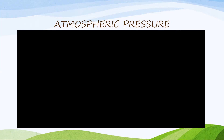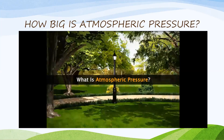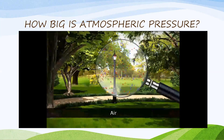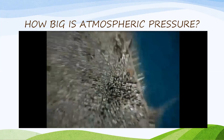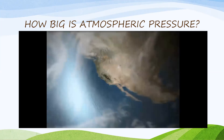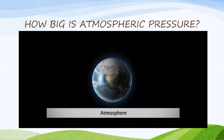What is atmospheric pressure? Atmospheric pressure means the pressure exerted by air. As you can see, everywhere there is air. The air above the surface of the earth, all together, can be called the atmosphere.